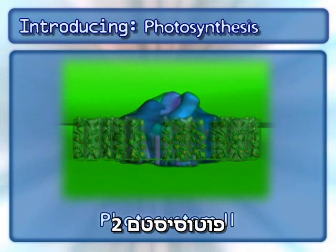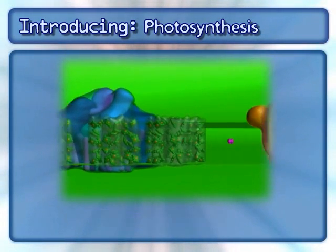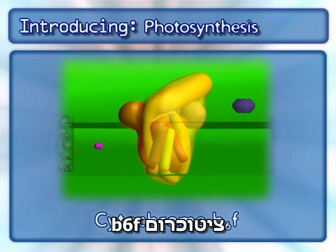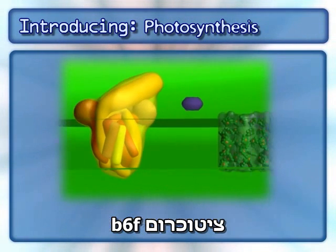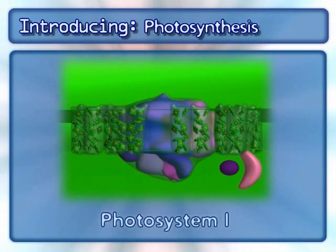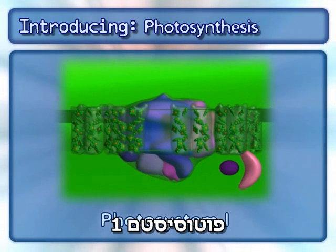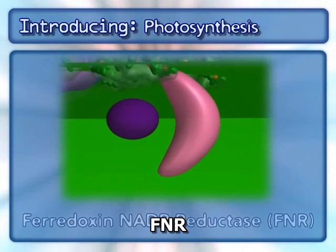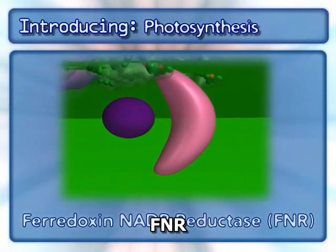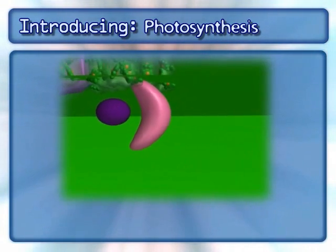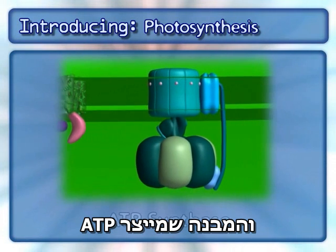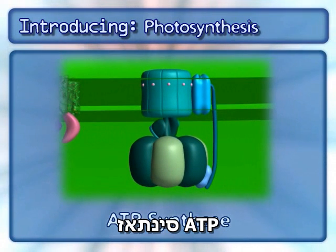Photosystem II, cytochrome B6F, Photosystem I, ferredoxin NADP reductase, and the complex that makes ATP, ATP synthase.